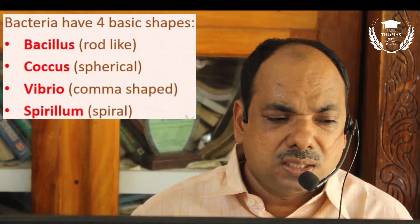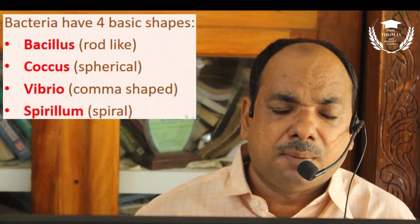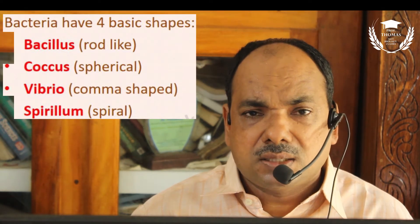Bacteria are classified into Bacillus, Coccus, Vibrio, and Spirillum shapes. Bacillus thuringiensis is a rod-shaped bacterium. Streptococcus pneumoniae is a spherical (coccus) bacterium. Vibrio cholerae is a comma-shaped bacterium. Spiral bacteria are also present.